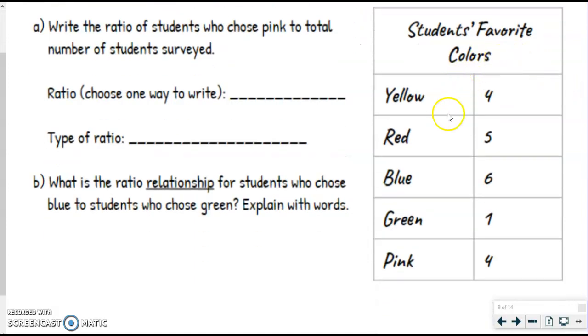So here's our students' favorite color survey. We've got yellow, red, blue, green, pink, four, five, six, one, four. I know that kind of looks like a seven. It's a one, just so you're aware.